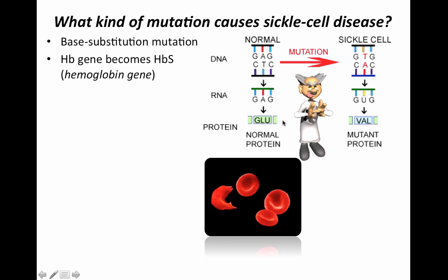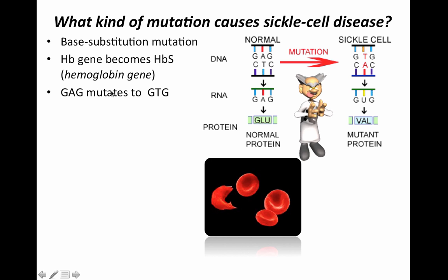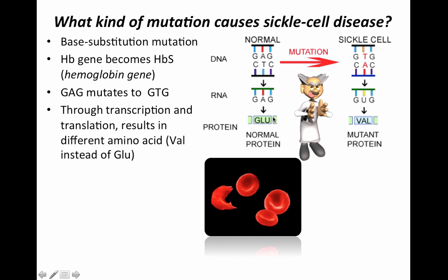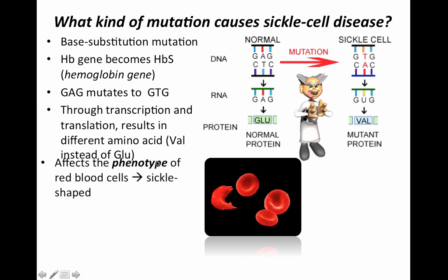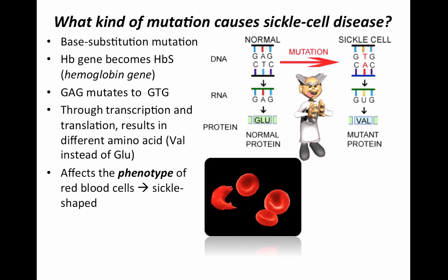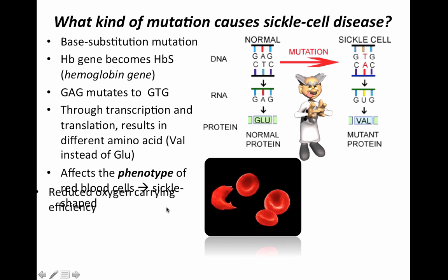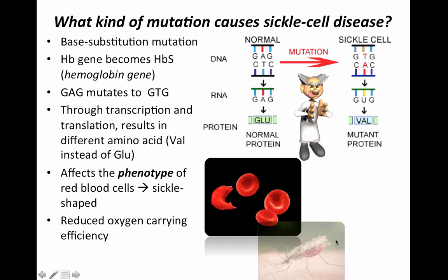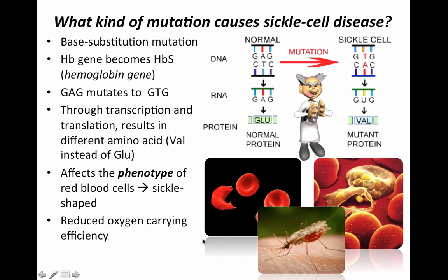The hemoglobin gene becomes the sickle cell anemia version — a different form of the gene called an allele. The normal allele is written as H superscript A and the diseased allele as H superscript S. GAG mutates to GTG, and after transcription and translation, valine replaces glutamic acid. That single amino acid difference completely changes the structure of the hemoglobin protein, causing red blood cells to become sickle-shaped with reduced oxygen-carrying efficiency.